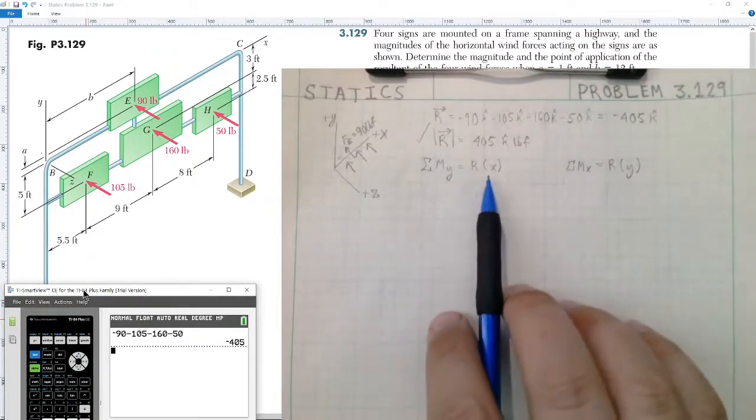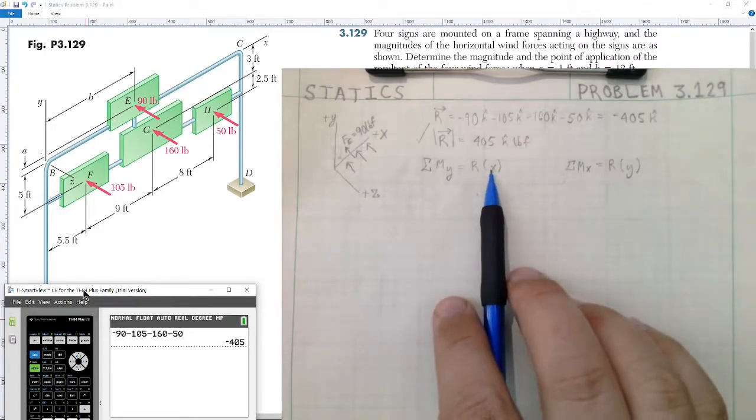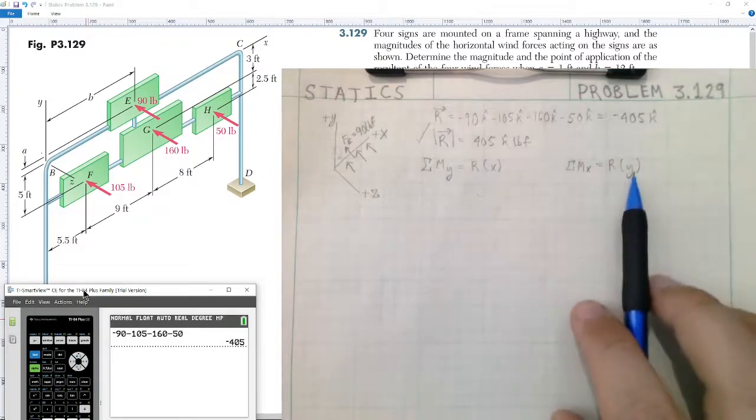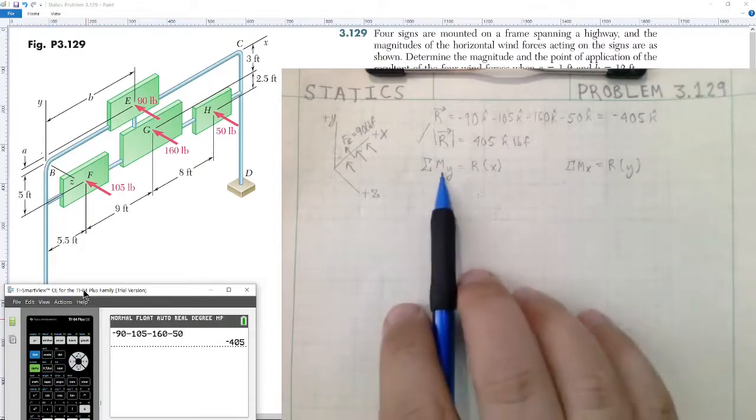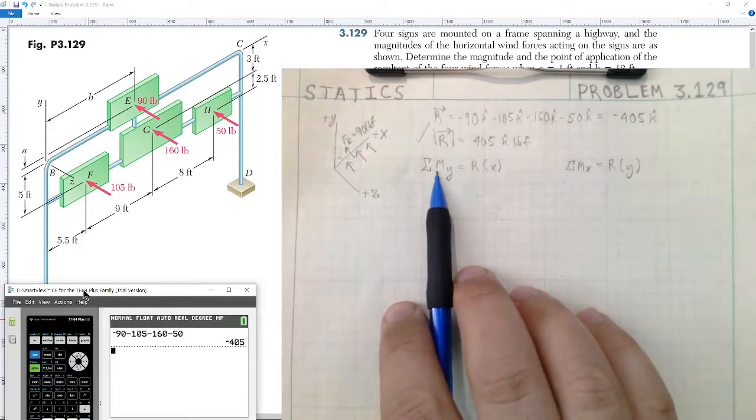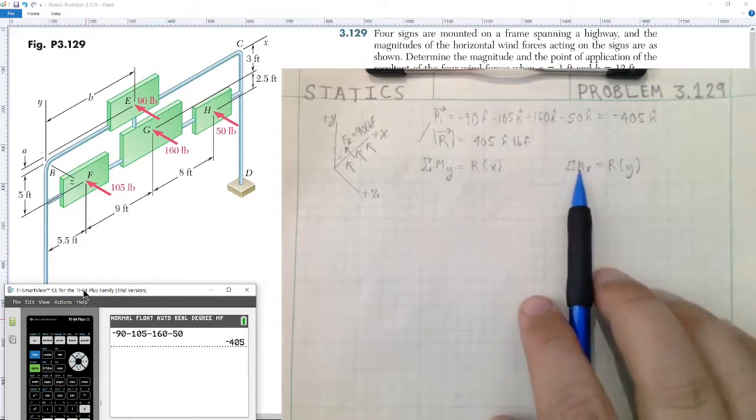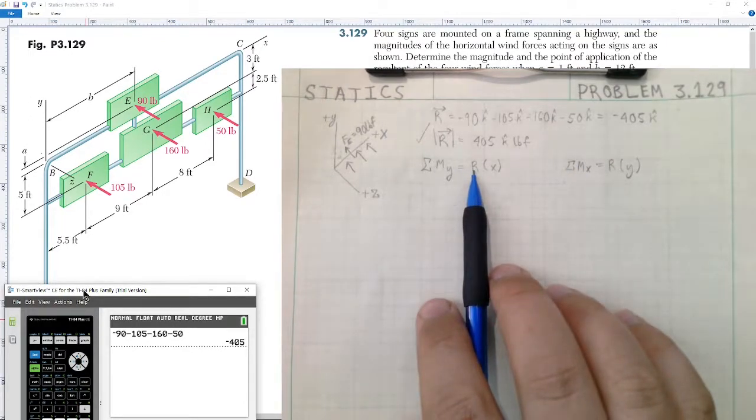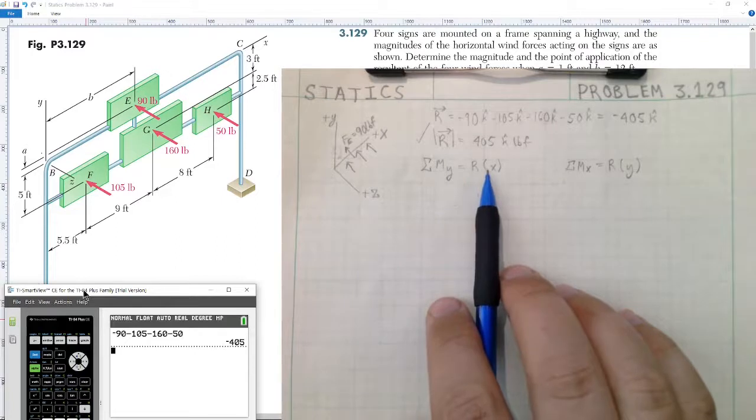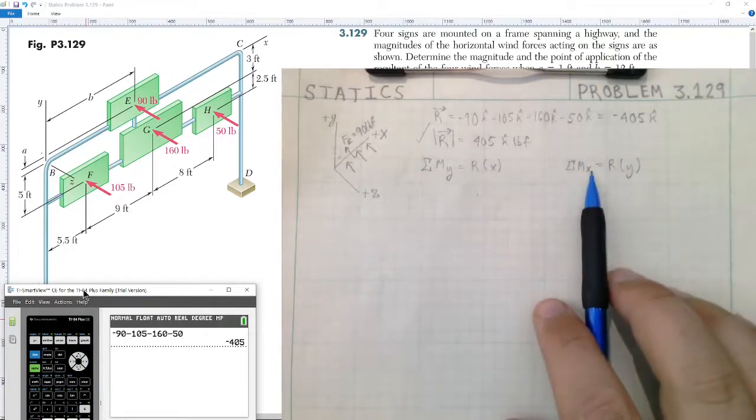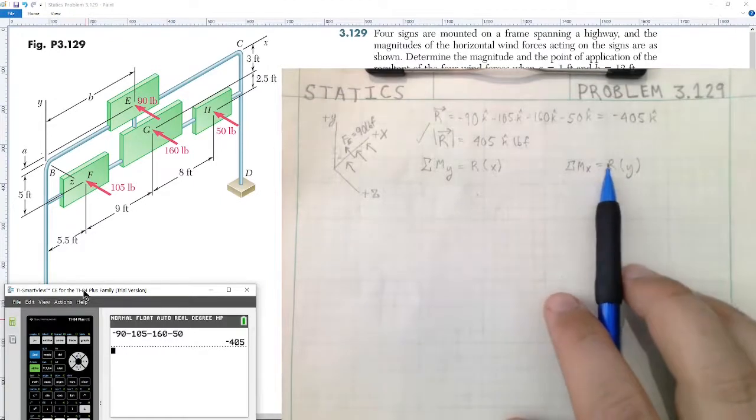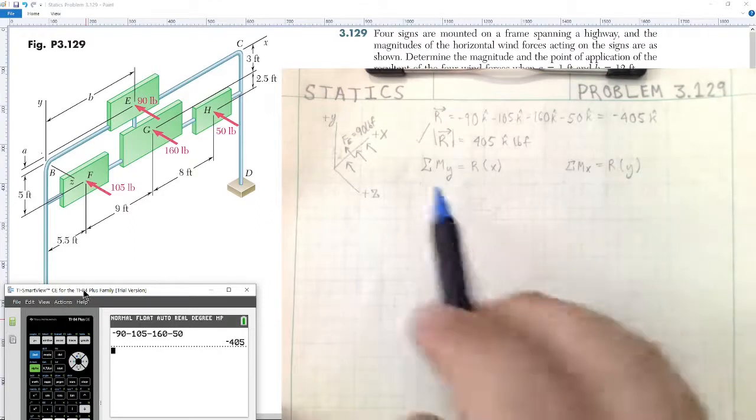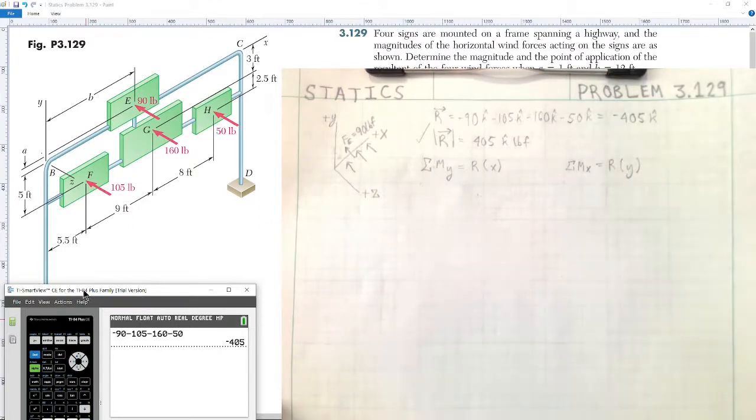So now to determine the position of the resultant being applied in the X-direction and its Y-coordinate, we're going to find the sum of the moments about the Y-axis and sum of the moments about the X-axis, and that will be equal to the resultant's magnitude multiplied by its position in the X-direction, or its magnitude times its Y-position.